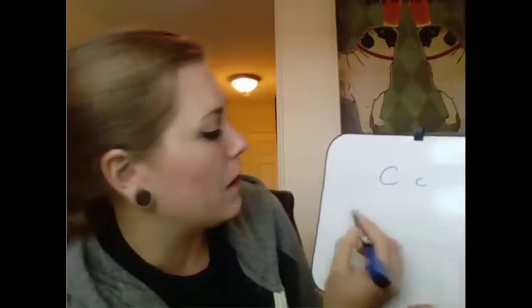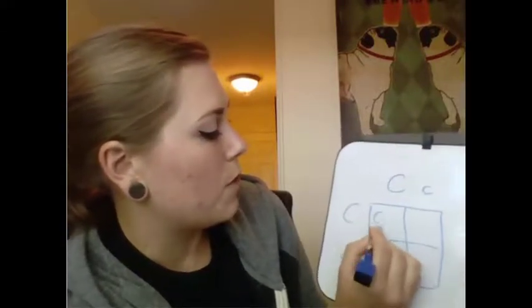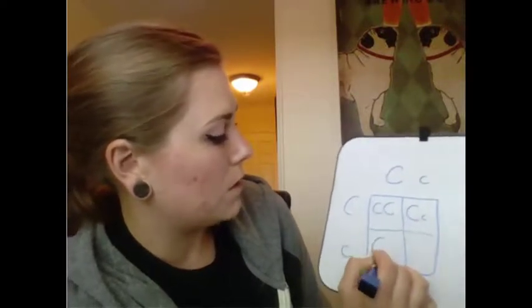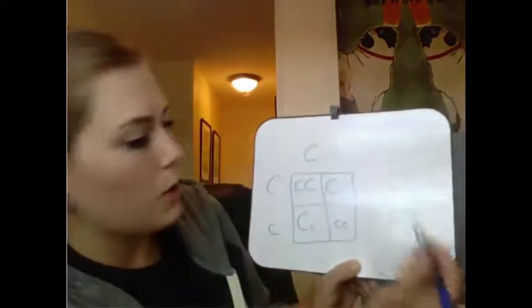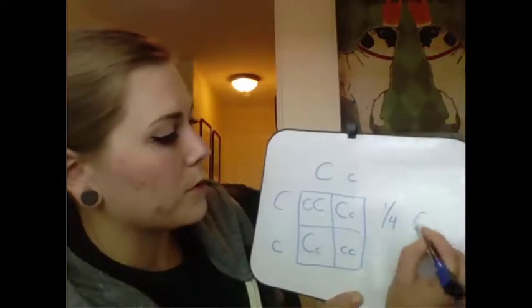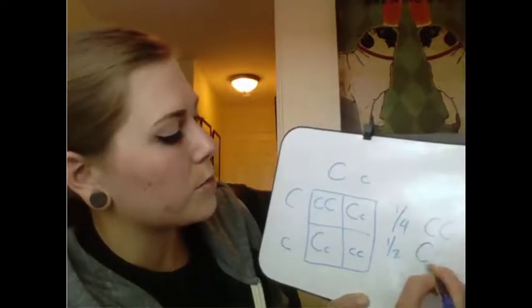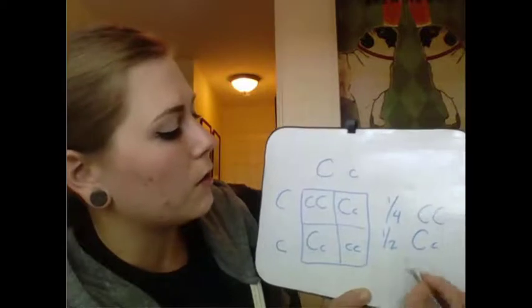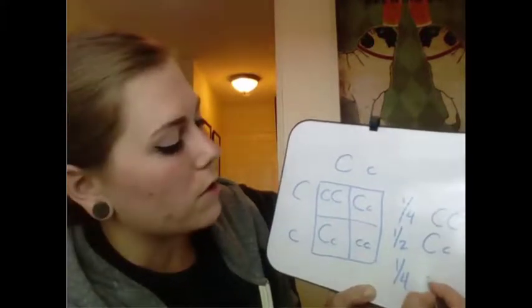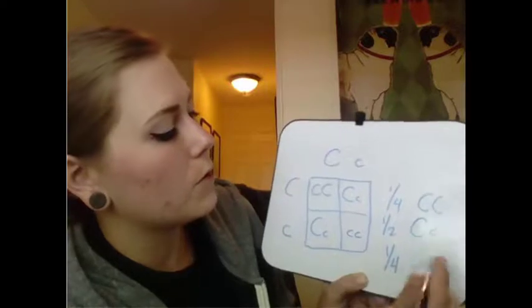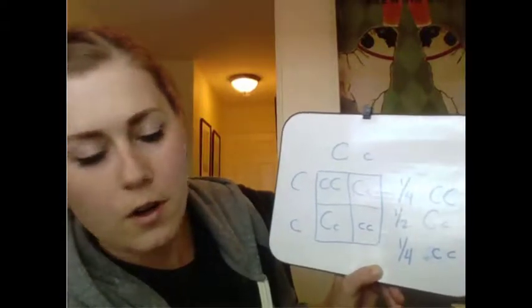Now let's take one of those heterozygous children and cross them with another heterozygous curly-haired person. The resulting Punnett square gives: big C, big C; big C, little c; big C, little c; and little c, little c. So one quarter of the offspring would be homozygous dominant for curly hair, one half would be heterozygous for curly hair — also displaying curly hair — and one quarter would be homozygous for straight hair. That's three quarters curly hair to one quarter straight hair.